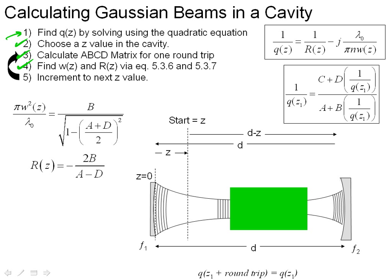And that's essentially the iterative procedure. And with this, we really can calculate what the Gaussian beam is going to look like from just about any cavity if we write the code.